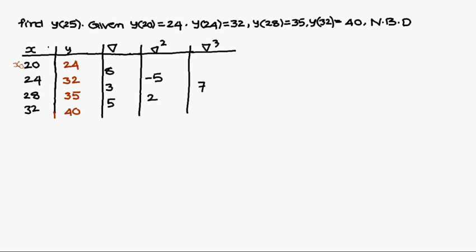Next, name the values: x0, x1, x2, x3 from the start. The corresponding y values are y0, y1, y2, y3. In Newton forward, naming starts from the top. In Newton backward, naming goes from bottom upward.